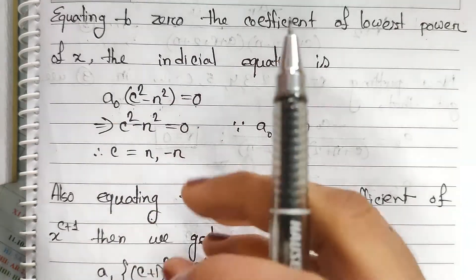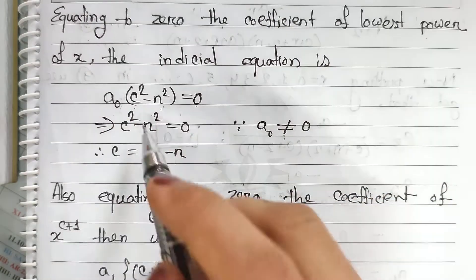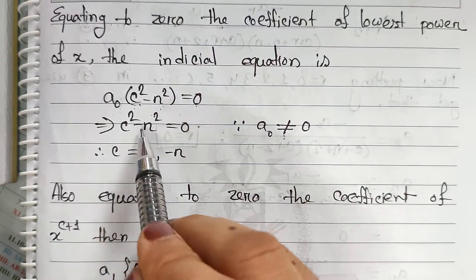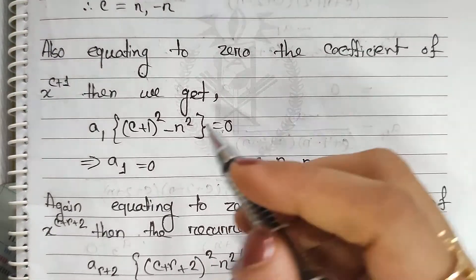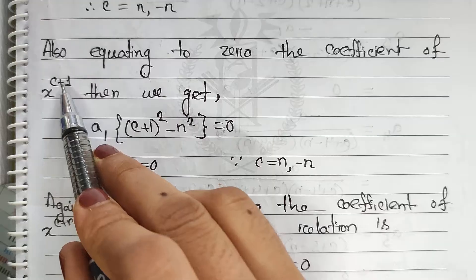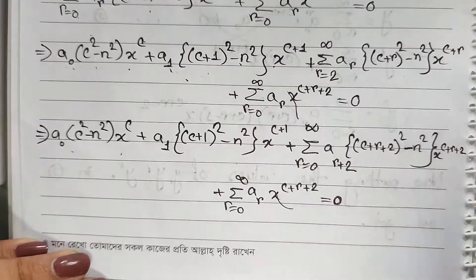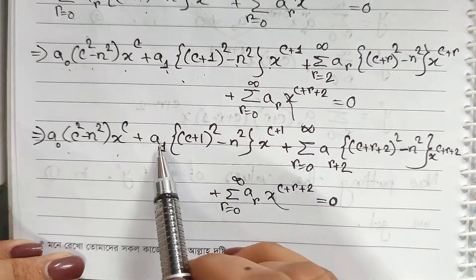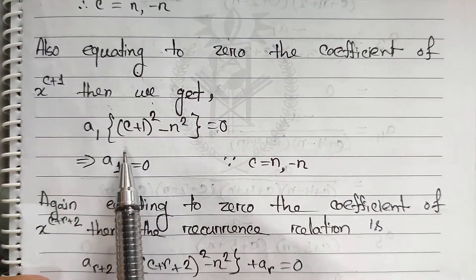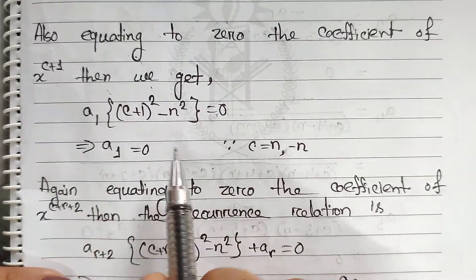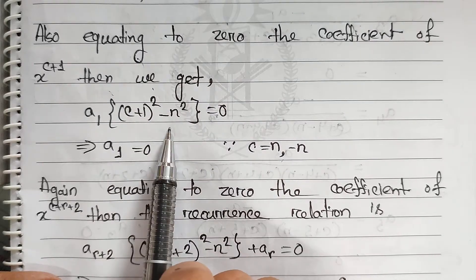So a₀ is not equal to 0 — we say a₀ is a free constant. Here a₀ is not zero. Then if c is equal to 0, the indicial equation holds. We also get c² minus n² equal to 0. Seen as x to the power c plus 1, the coefficient of c plus 1 gives a₁. Since the number of c equals n, the number of c is higher than n.